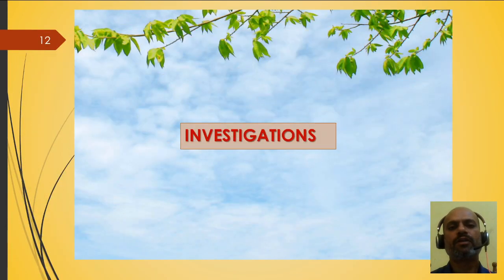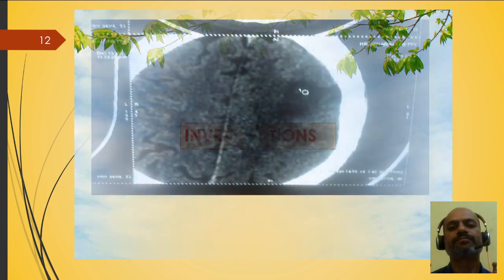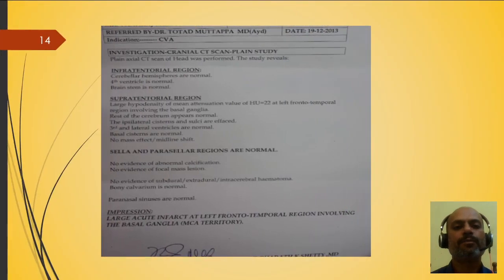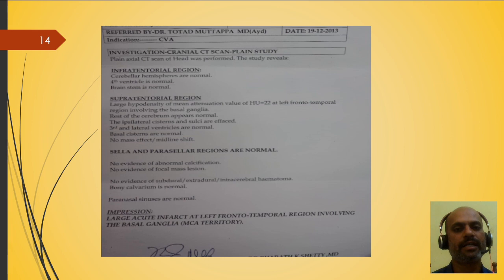Investigation: we performed a CT scan of the head. You can observe a blackish area in the left hemisphere of the brain — that is hypodensity. This is the CT scan report. The impression reads: large acute infarct at the left frontotemporal region involving the Basal Ganglia and MCA territory.